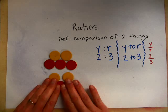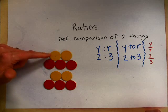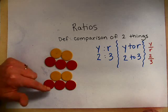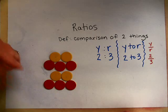Now if you have another set, you still have two yellow for every three red. So two yellow, three red, two yellow, three red. But you have more yellow and more red altogether.